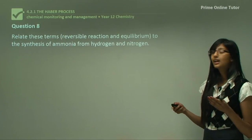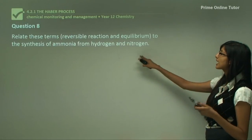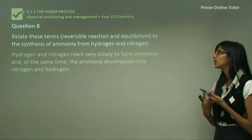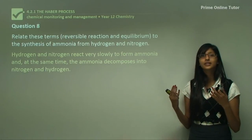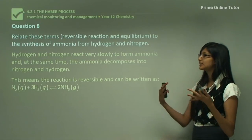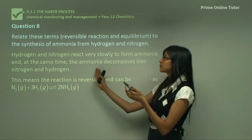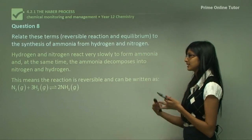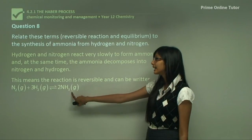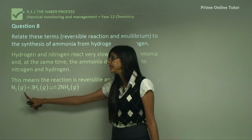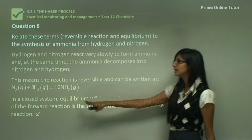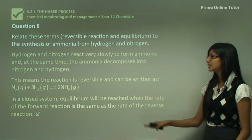Question 8 asks us to relate reversible reaction and equilibrium through the synthesis of ammonia from hydrogen and nitrogen. Hydrogen and nitrogen react slowly to form ammonia, and at the same time ammonia decomposes back into nitrogen and hydrogen — meaning the reaction is reversible: N₂ + 3H₂ ⇌ 2NH₃. In a closed system, equilibrium is reached when the rate of the forward reaction equals the rate of the backward reaction, i.e., the rate of ammonia formation equals the rate of its dissociation.